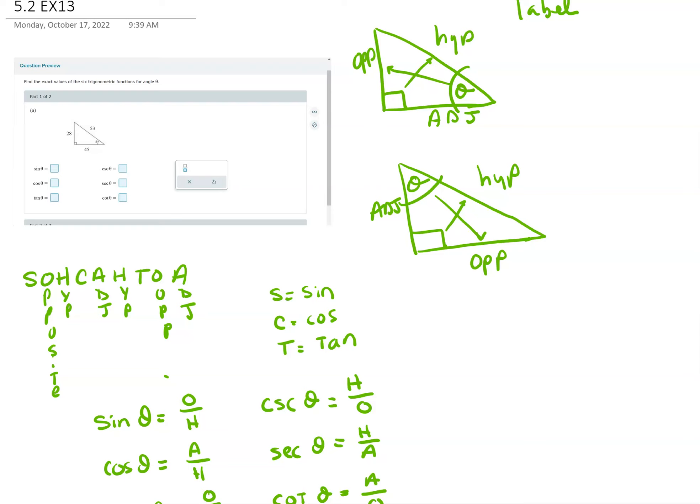Let's look at solving for exact values of the six trigonometric functions. First thing you have to do is label your sides.